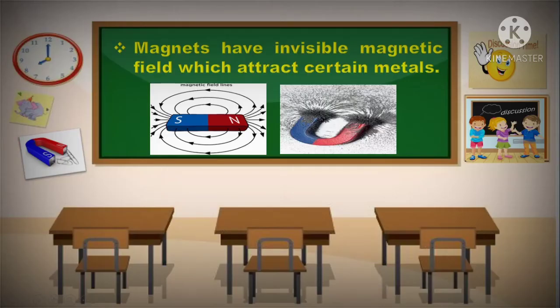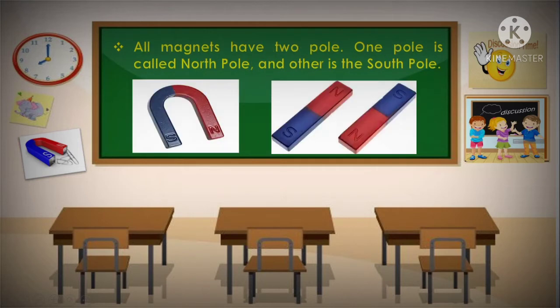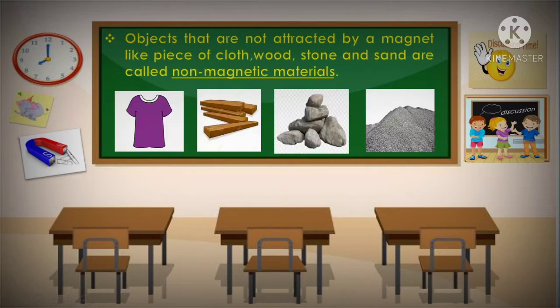Magnets have an invisible magnetic field which attracts certain metals. Magnets do not attract all metals. Objects made of nickel, iron, and cobalt are attracted to magnets. All magnets have two poles — one pole is called the North Pole and the other is the South Pole. There are several types of magnets like ring magnets, rectangular magnets, bar magnets, and horseshoe magnets. Objects that are not attracted by a magnet — like a piece of cloth, wood, stone, and sand — are called non-magnetic materials.